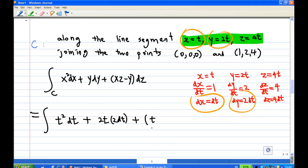And then, I put xz minus y. x is t, Z is 4t. So this is equal to 4t minus y. y is 2t. And what is dz? dz is 4 dt. So I get simplifying now.